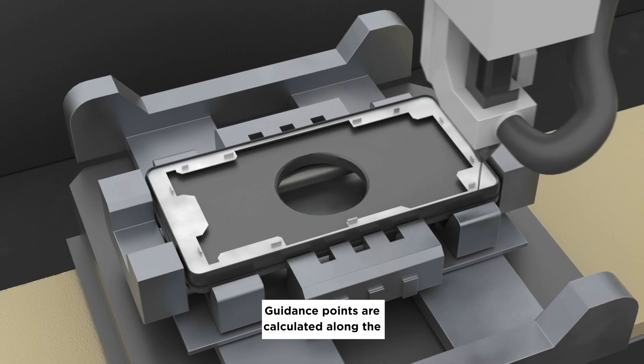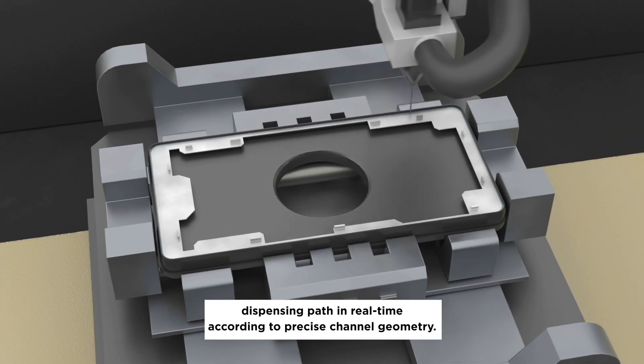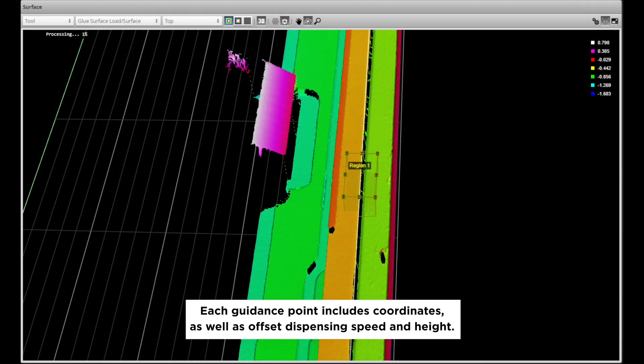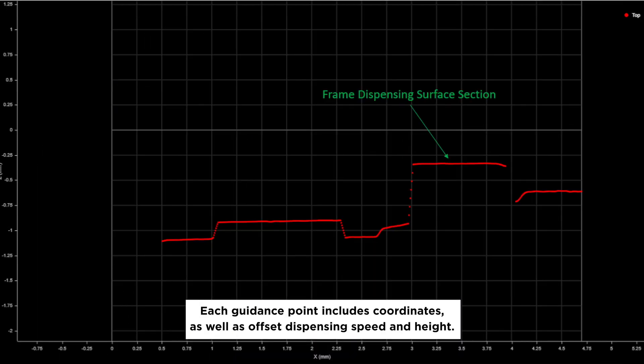Guidance points are calculated along the dispensing path in real-time according to precise channel geometry. Each guidance point includes coordinates as well as offset dispensing speed and height.